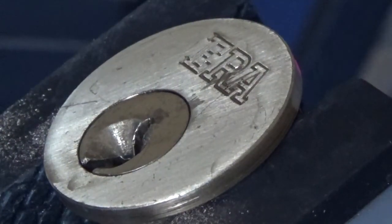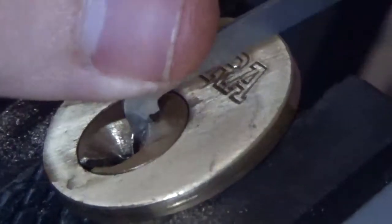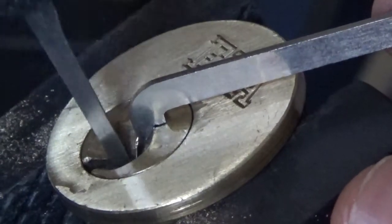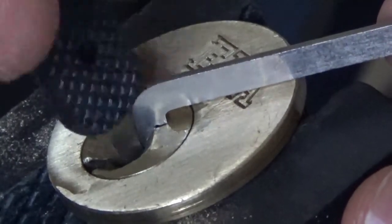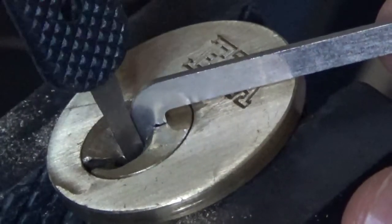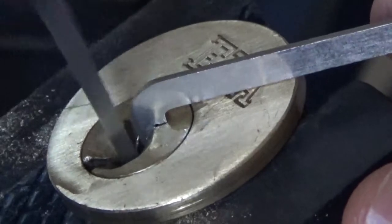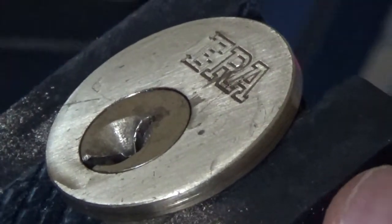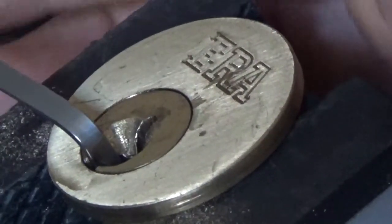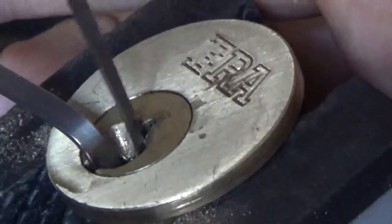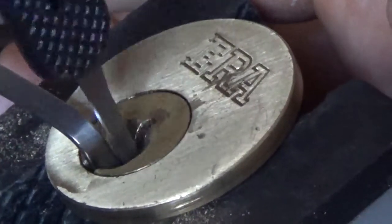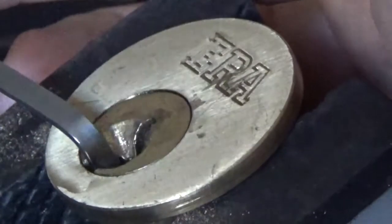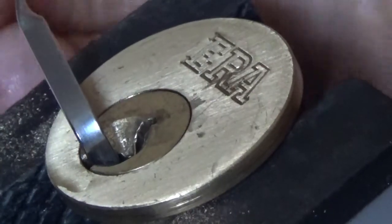Okay, I'll try to pick this ERA brass rim cylinder to our best. We'll try rake first, maybe try bottom of the keyway instead. We are trying to rake it, hmm, not giving much feedback.